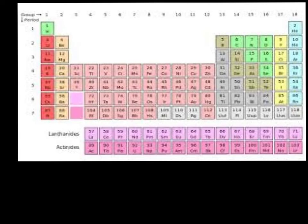So the column number or group number for 1, 2, 13 through 18 tell us the number of valence electrons that every element in that group has. So every element in group 1 has one valence electron. Every element in group 2 has two valence electrons.